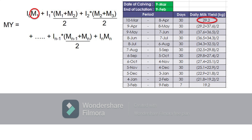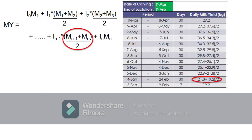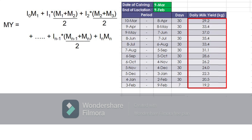The milk yield recorded on the first recording date is assumed as the daily milk yield within the period between the calving date and the first recording date. The estimated daily milk yield between the first and second recording dates is calculated as the average of the milk yields recorded on those two recording dates. The same applies for the estimated daily milk yield between the second and third recording dates, and for all succeeding periods thereafter. The milk yield recorded on the last recording date is the assumed daily milk yield within the period between the last recording date and the lactation end date.